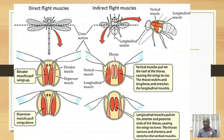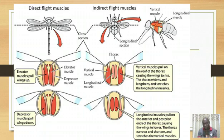Flight is brought about by direct flight muscles and indirect flight muscles. Direct flight muscles bring about flight directly because they bring about movement of the wings directly, since they are attached directly on the base of the wings. We see these muscles — the elevator muscles and the depressor muscles — attached at the base of the wings directly. Hence the name direct flight muscles.